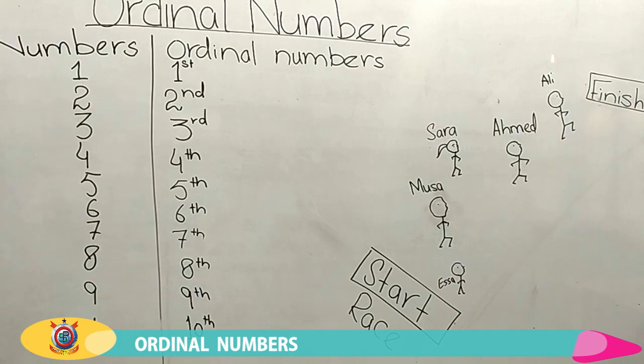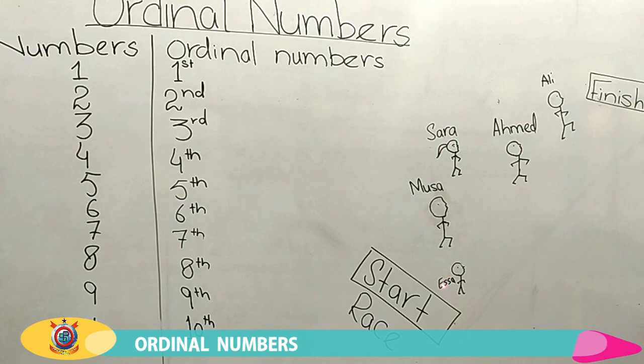So to summarize: Ali is 1st, Ahmed is 2nd, Sarah is 3rd, Musa is 4th, and Isa is 5th.